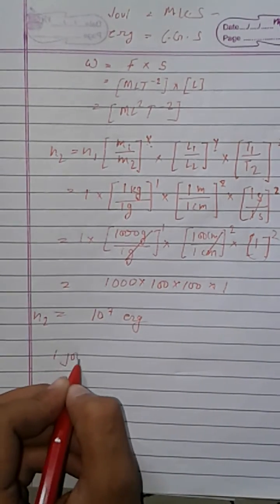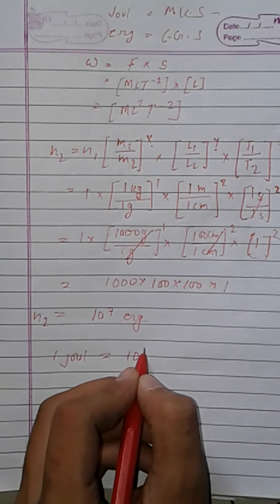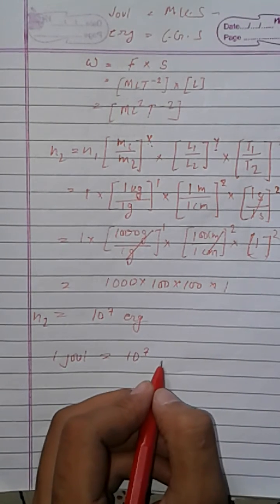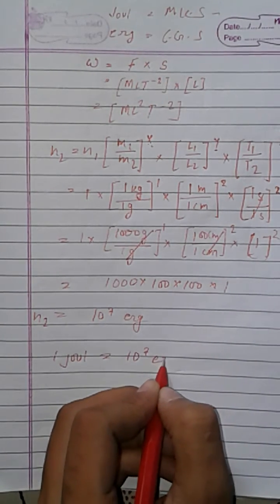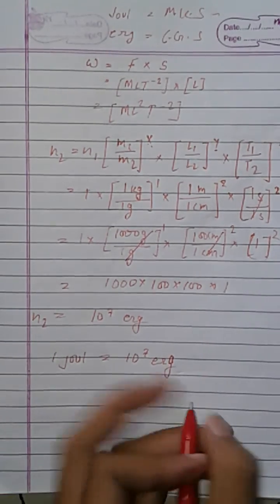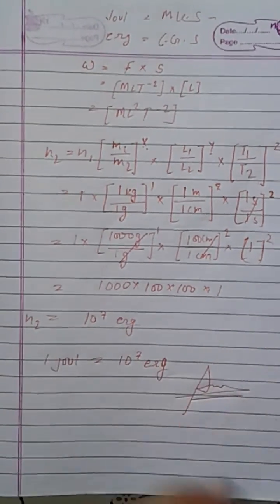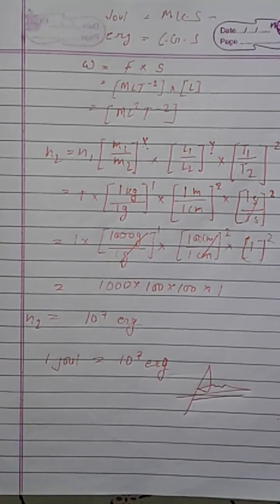Therefore, 1 Joule is equal to 10 to the power 7 ergs. The conversion is complete. Thanks for watching — if you like the video, please like and subscribe. Thank you.